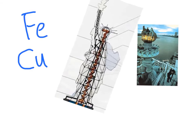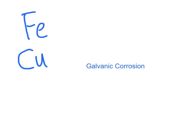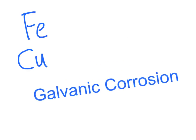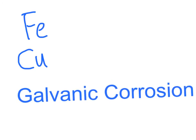This threatened the strength of the structure. This electrochemical reaction is called galvanic corrosion. Galvanic corrosion occurs when two dissimilar metals come into contact through an electrolyte that speeds up the degradation of the more active metal.